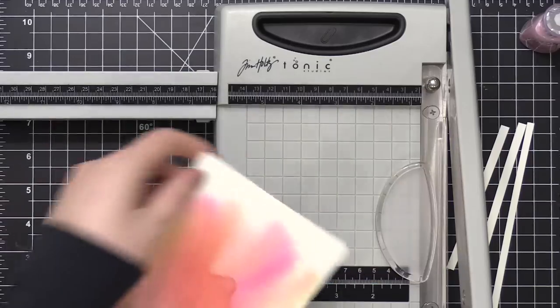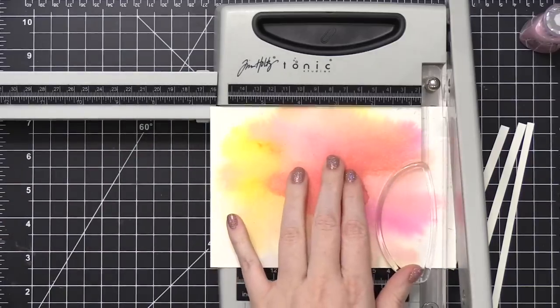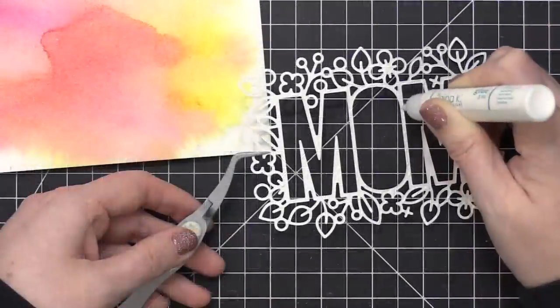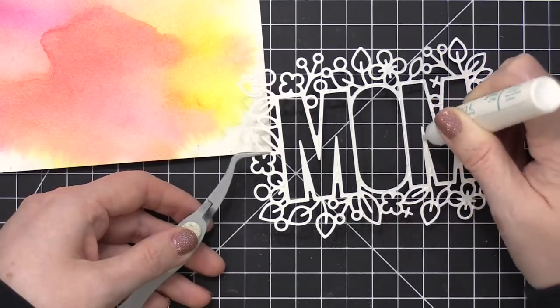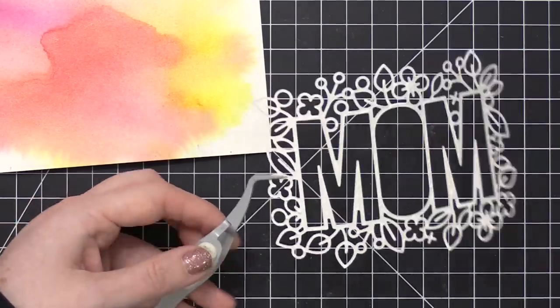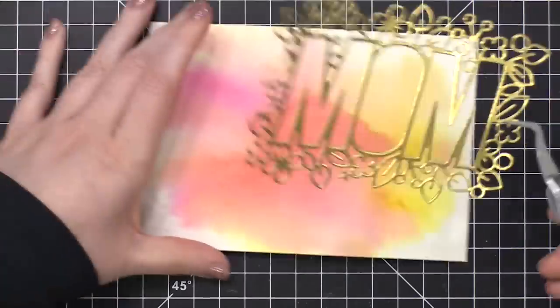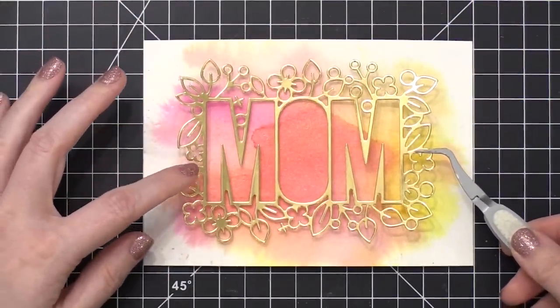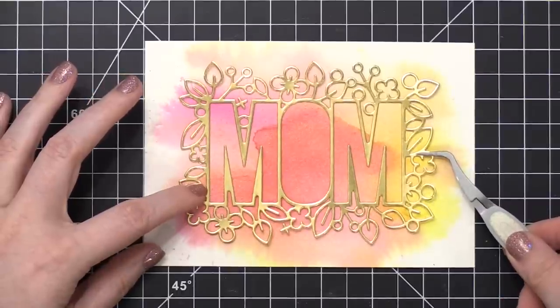So I'm trimming down this watercolor piece so that it is 6 1/2 inches wide by 4 1/2 inches tall, and I'm going to be gluing that gold mom die directly onto my watercolor paper. I'm using some Gina K Connect glue. I'm just holding that die cut with some tweezers while I get it positioned perfectly over the top of this watercolor background.